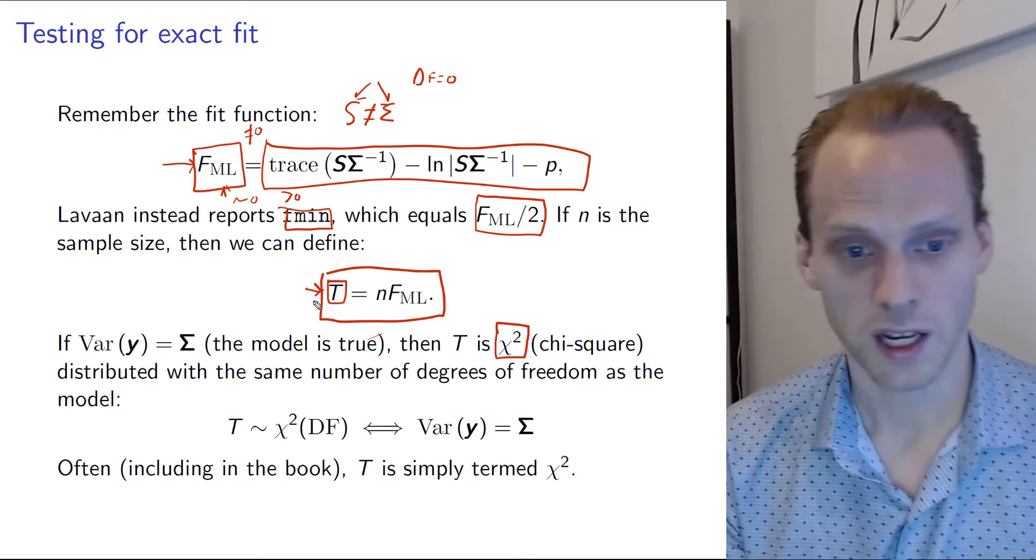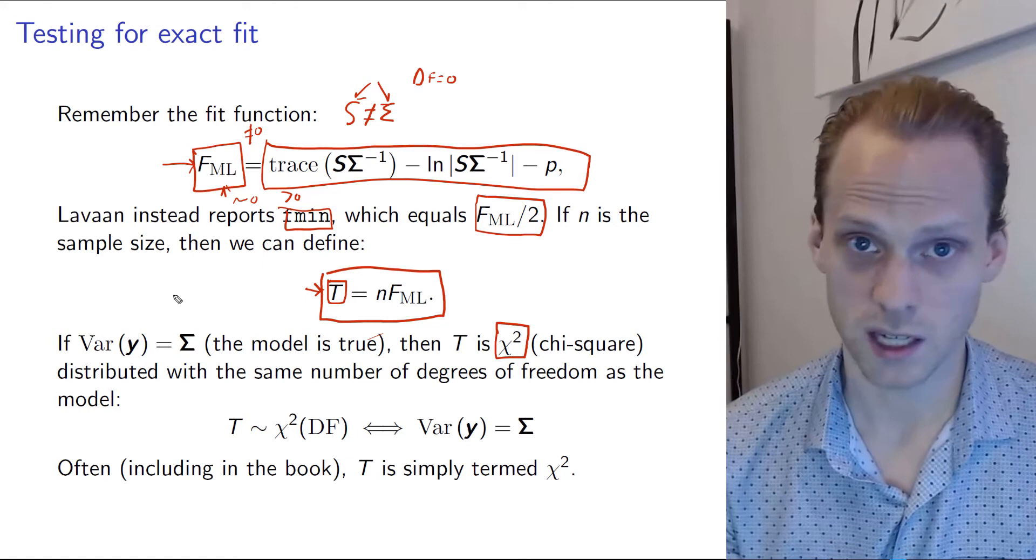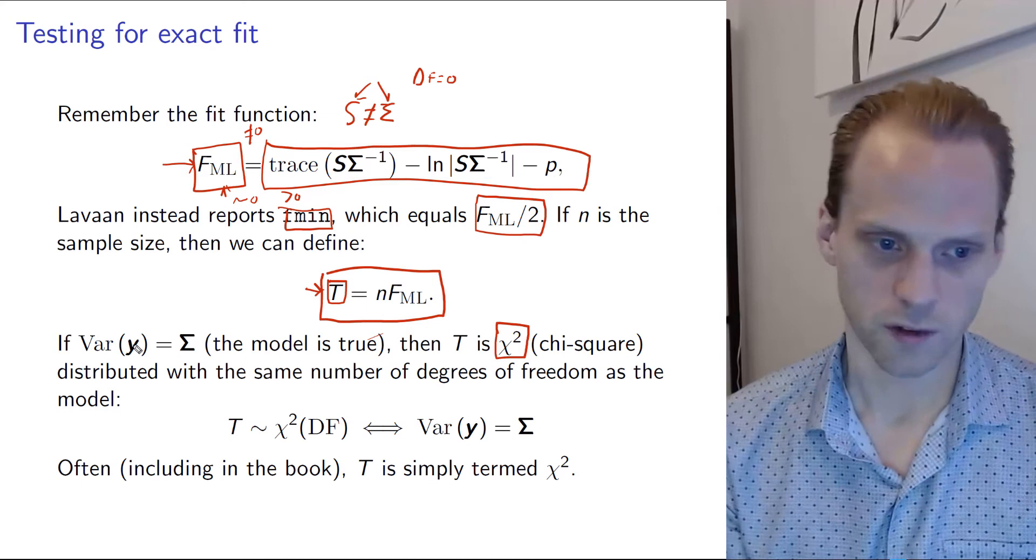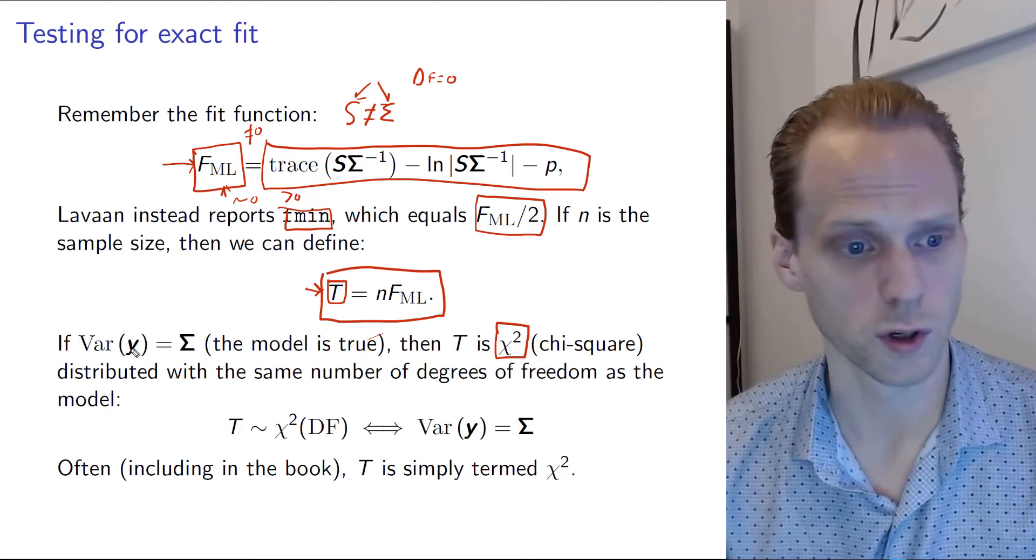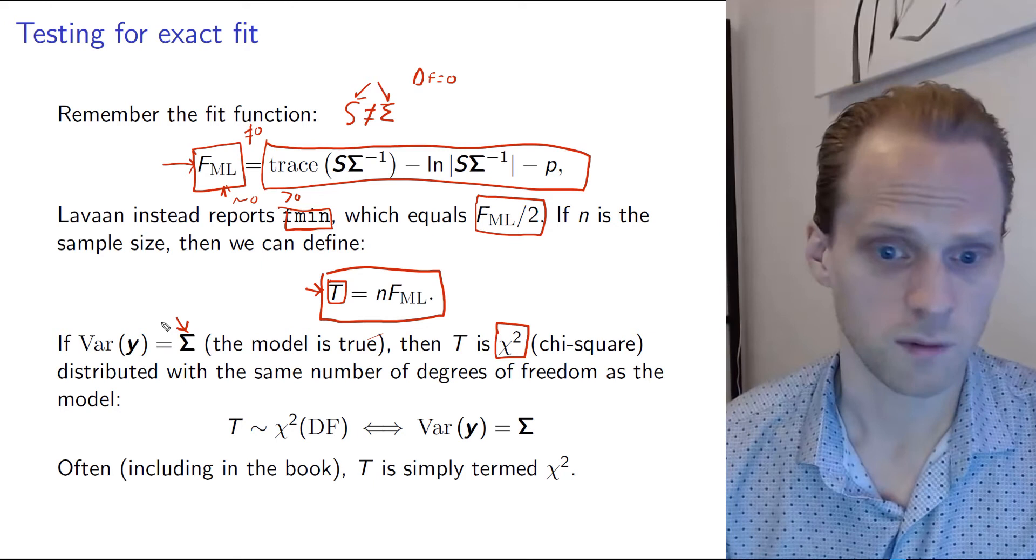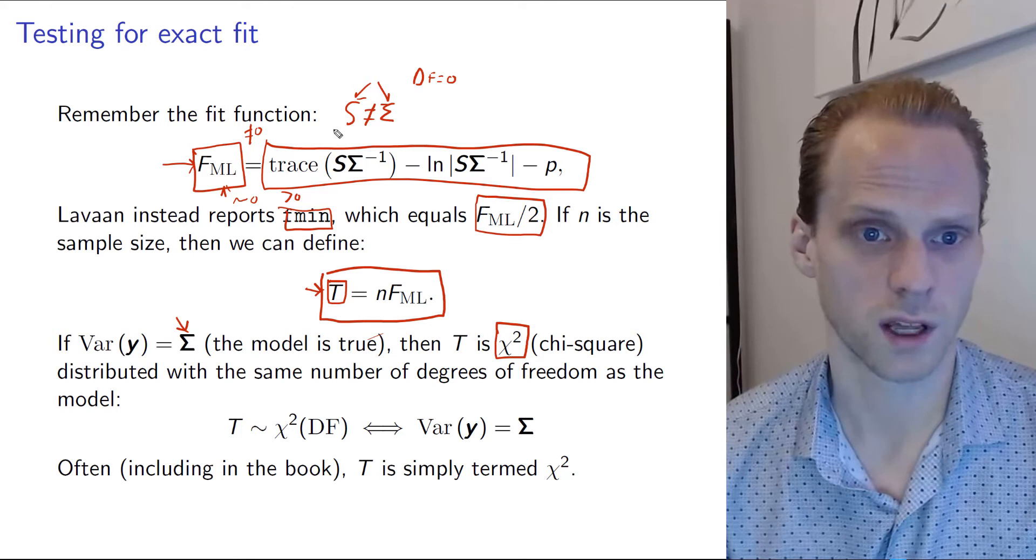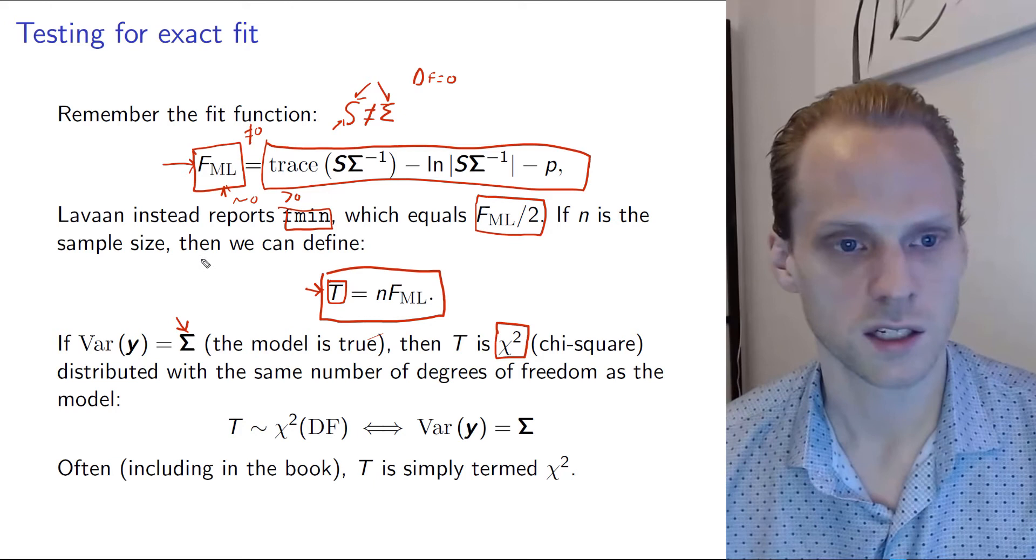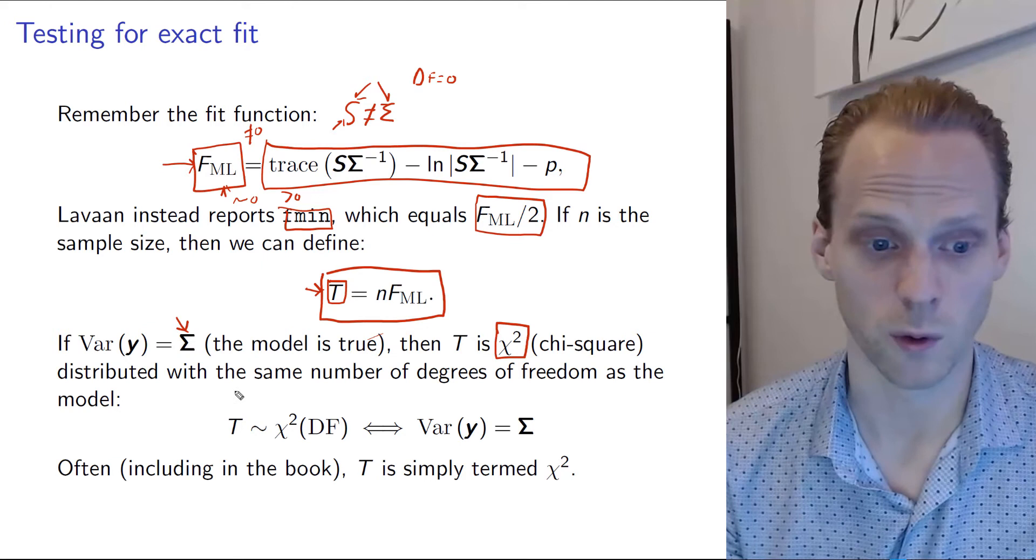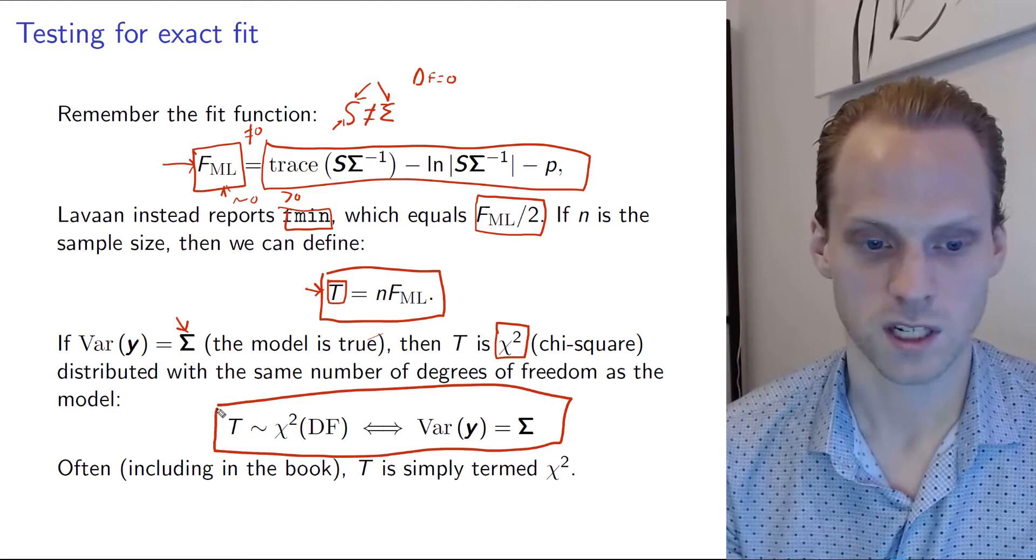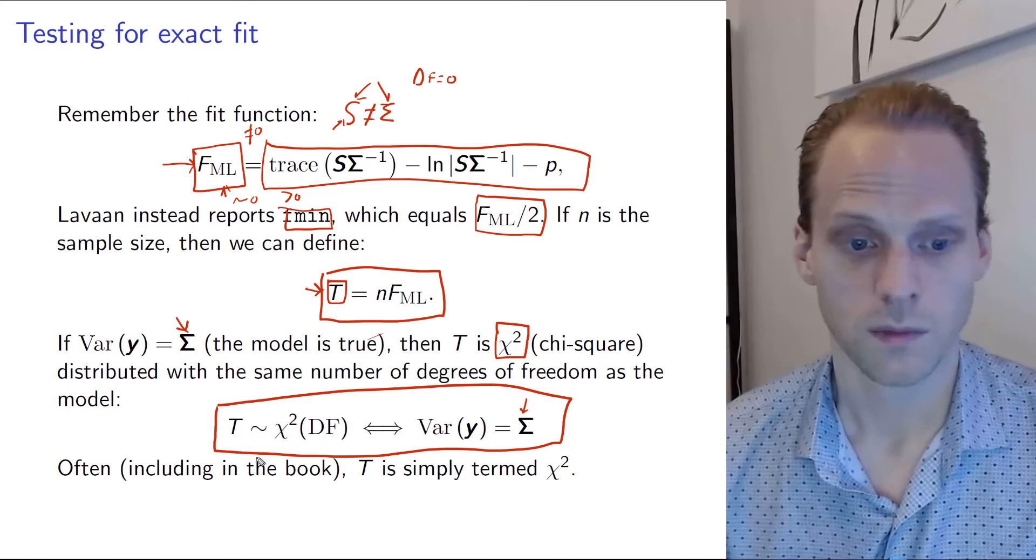Okay, so what is this? Well, the nice thing about this t statistic is that it has this property that if sigma is actually the true variance covariance matrix of the model, so not of the data because the data has an observed variance covariance matrix, but in the true world, in the true model, sigma is the true variance covariance matrix. And we would generate data from that and then fit our model and get our observed variance covariance matrix. Then this t distribution would be chi-square distributed with the same number of degrees of freedom as in the model. So that's this expression here, which is very important. So this says that if sigma is actually the true model, then this test statistic will have a chi-square distribution.